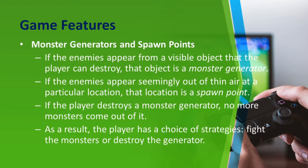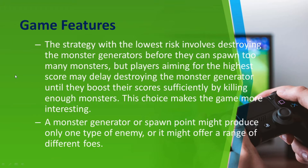If enemies appear from a visible object the player can destroy, that object is a monster generator. If enemies appear seemingly out of thin air at a particular location, that is called a spawn point. If the player destroys a monster generator, no more monsters come out of it, giving the player a strategic choice: fight the monsters or destroy the generator. The strategy with the lowest risk involves destroying the generator before too many monsters spawn, but players aiming for the highest score may delay destroying it to kill enough monsters to boost their score. Monster generators or spawn points might produce one type of enemy or a range, and could also spawn boss monsters.